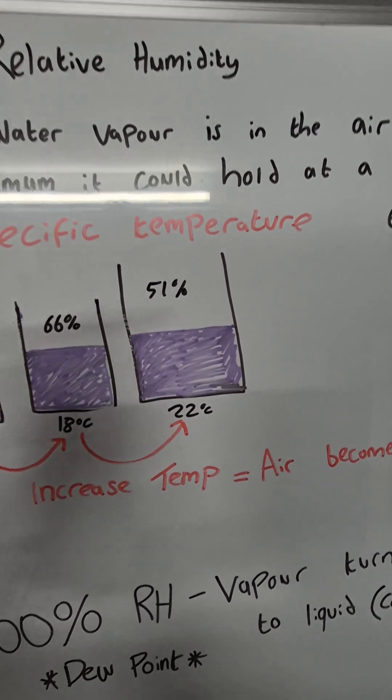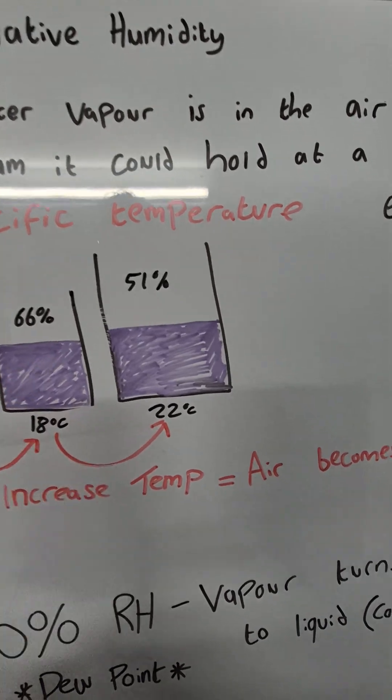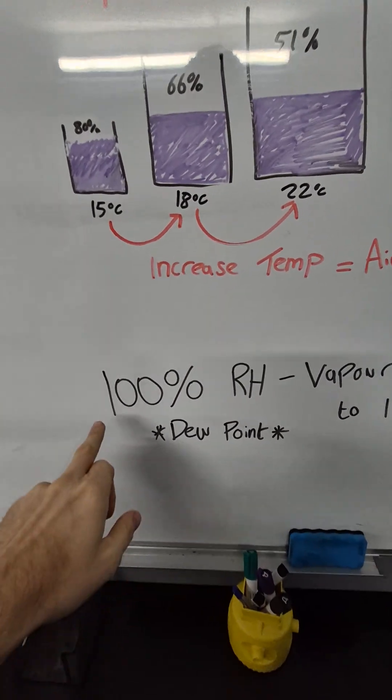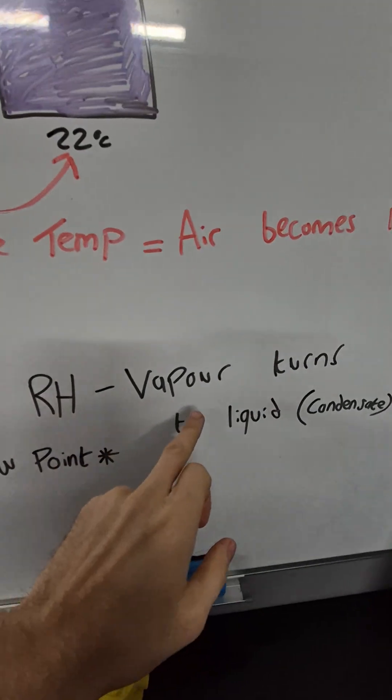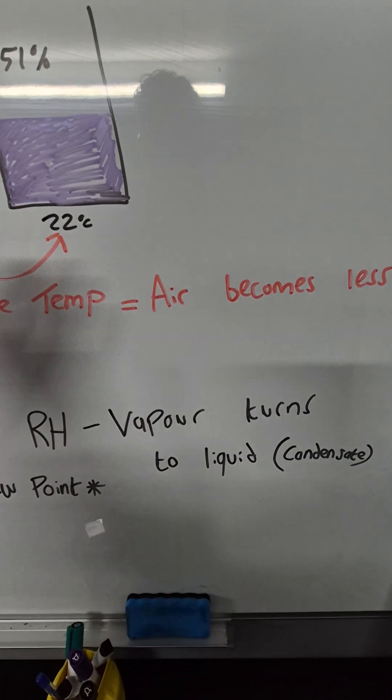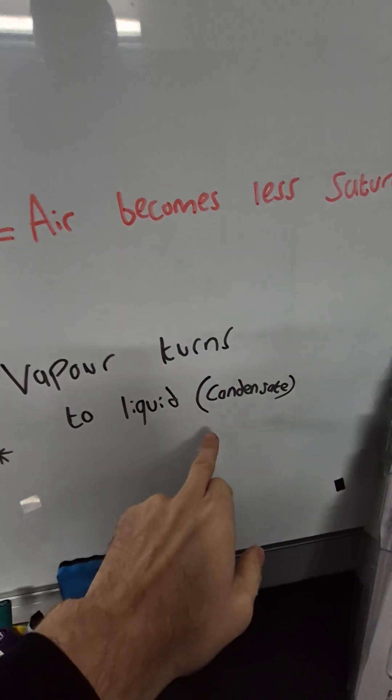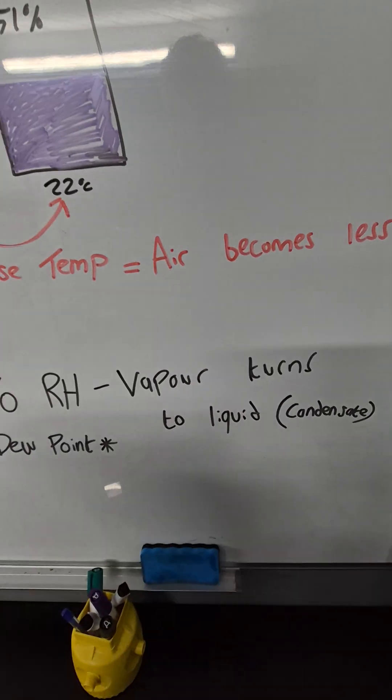So a combination of heat and ventilation is perfect. Now, when we get to 100% RH, that is when the water vapour, so that gas, water in its gas form, turns to a liquid, condensate. So you'll see it on the windows.